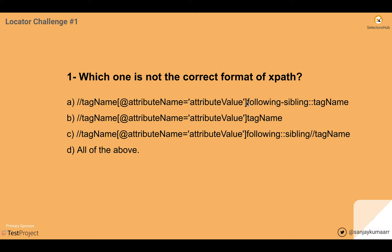Here a forward slash is missing. If you recall, we used to write a forward slash after the closing square bracket. The second one: tag name, at-rate attribute name equals attribute value — again, forward slash is missing after the closing bracket, directly written as tag name. The third one: double forward slash, tag name, at-rate attribute name equals value, following-sibling — again, forward slash is missing.